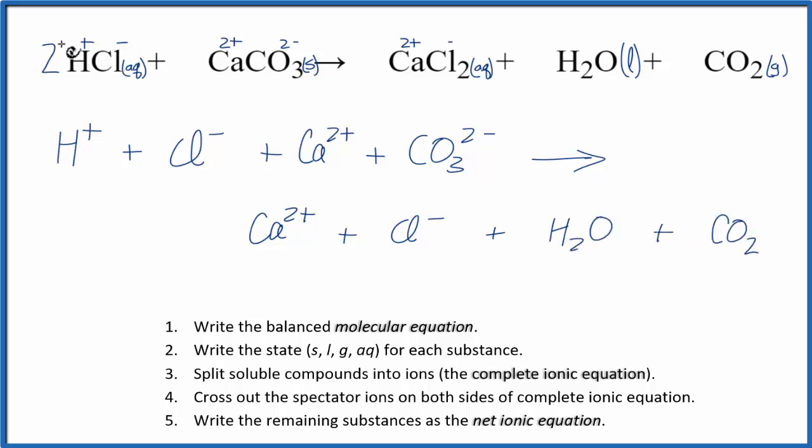We also have to take into account these coefficients and subscripts. We have 2 HCl molecules, so 2 times H+, 2 times Cl-. Then we have 2 chlorines here, so we need to put a 2 in front of Cl- there. So everything matches up on both sides of the equation.